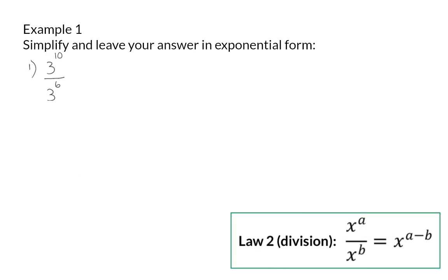Example 1. Simplify and leave your answer in exponential form. Here we have base numbers that are the same, so we know that we can keep them the same, and because we are dividing, we will subtract the exponents, saying 10 minus 6. This means you can directly write the final answer, which will be 3 to the power of 4. So once the threes in the numerator and denominator have been simplified by dividing, there will be four threes left that should be multiplied.